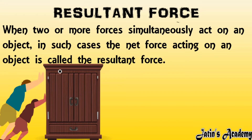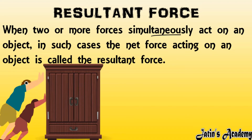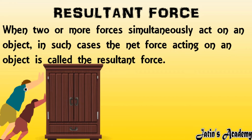Next topic is resultant force. For example, one person alone cannot move a very heavy almirah, so a second person is needed so that both can apply force together and the almirah will move. When two or more forces act simultaneously on an object, the total force exerted by both persons is called the resultant force — the total force acting on one object from multiple bodies.